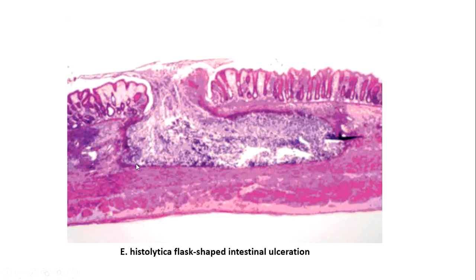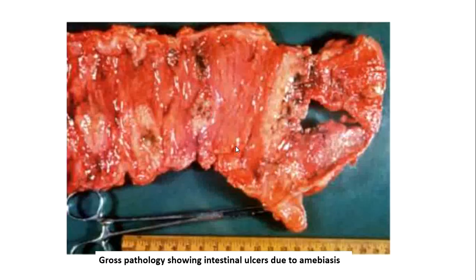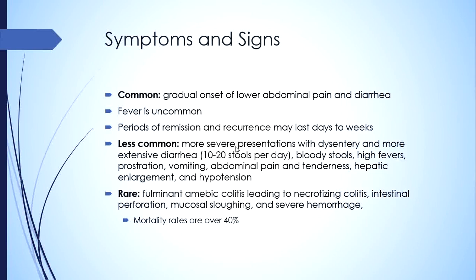Active amoeba can really be found at the interface between necrotic and live tissues, and there is a lot of necrotic tissue inside the ulcer. This is the gross pathology specimen showing multiple ulcers in the colon while the intervening mucosa is usually normal with no inflammation. The most common symptoms when the disease is symptomatic are gradual onset of lower abdominal pain and diarrhea. Fever is uncommon, and usually without treatment the disease becomes chronic.